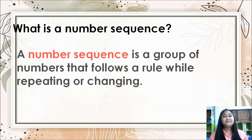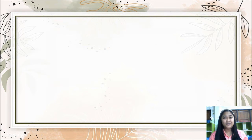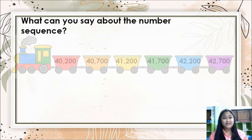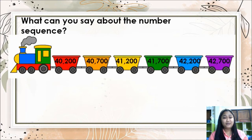So what is a number sequence? A number sequence is a group of numbers that follows a rule while repeating or changing. So here we have: 40,200 — 40,700 — 41,200 — 41,700 — 42,200 — and 42,700.